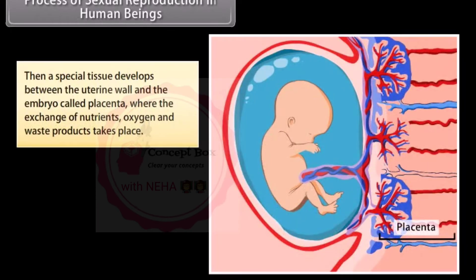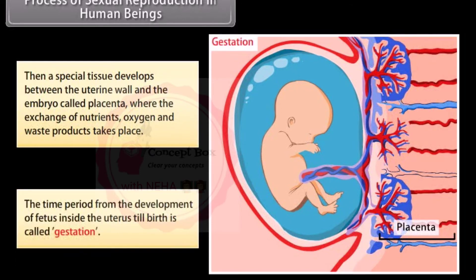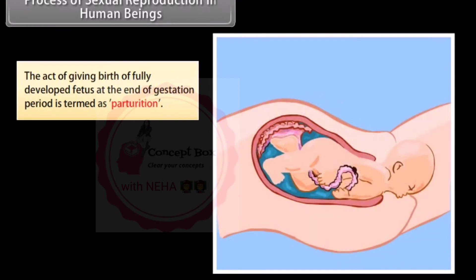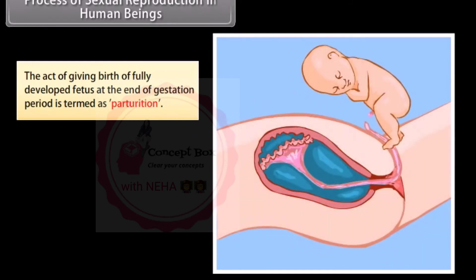A special tissue develops between the uterine wall and the embryo called the placenta, where the exchange of nutrients, oxygen, and waste products takes place. The time period from the development of the fetus inside the uterus until birth is called gestation, and the act of giving birth to a fully developed fetus at the end of gestation is termed parturition.